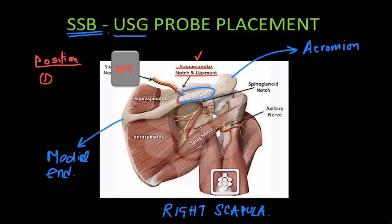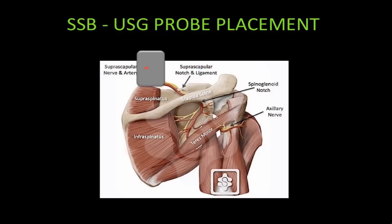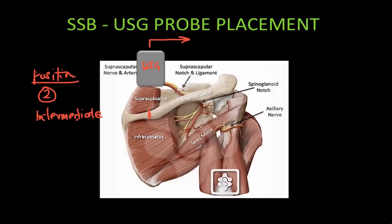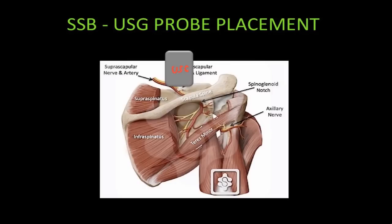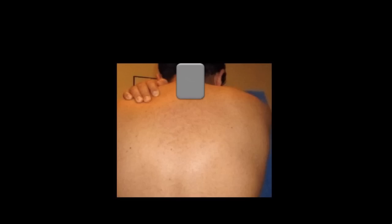With the ultrasound probe in position one we try to visualize the medial end of the spine of the scapula. Moving the probe more laterally brings us to position two, a slightly more intermediate position between the medial end and the midpoint of the spine of the scapula. Moving the probe slightly more lateral brings us to position three, where the ultrasound probe directly lies upon the scapula notch, which corresponds to approximately the midpoint of the spine of the scapula.